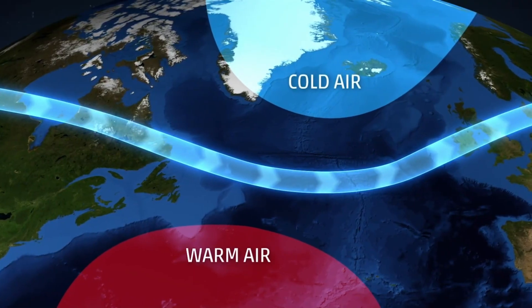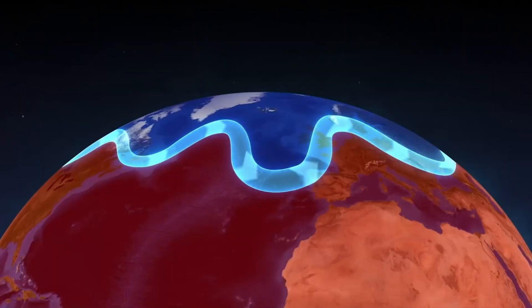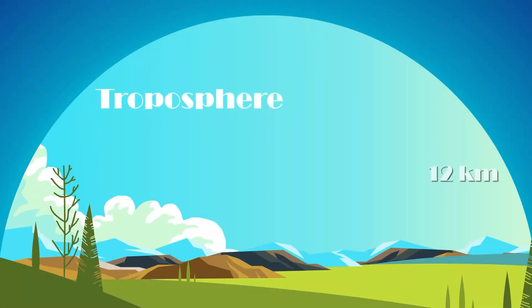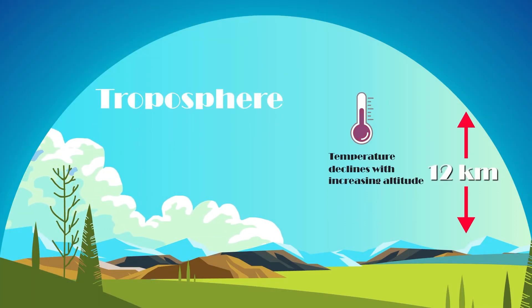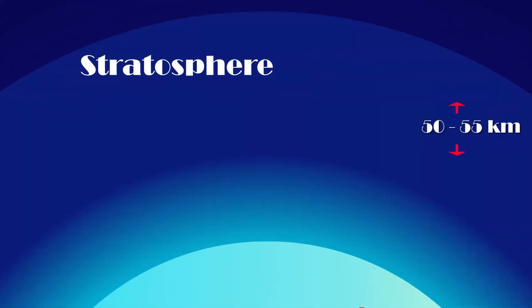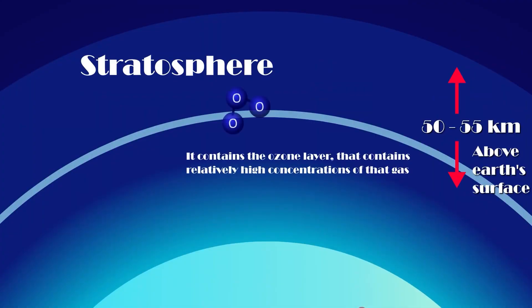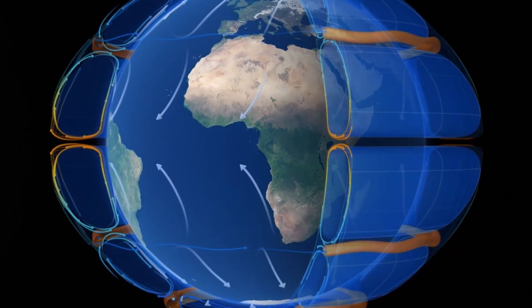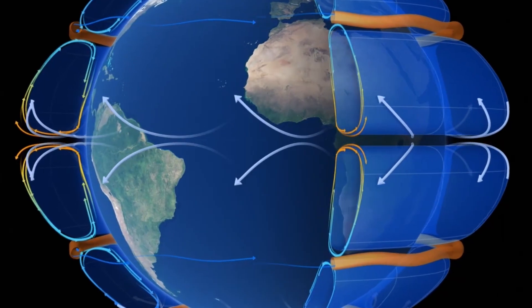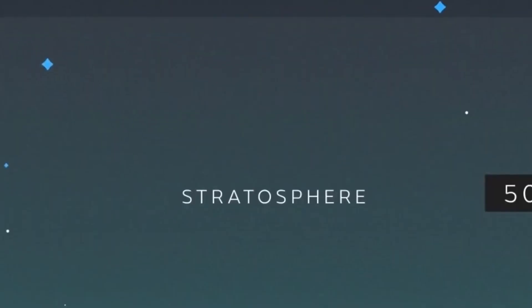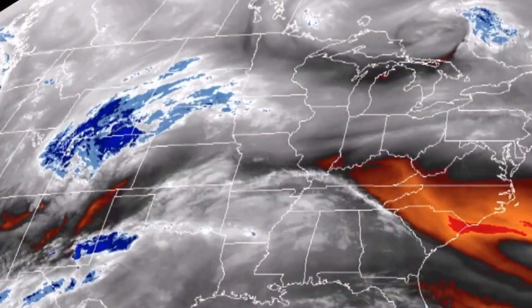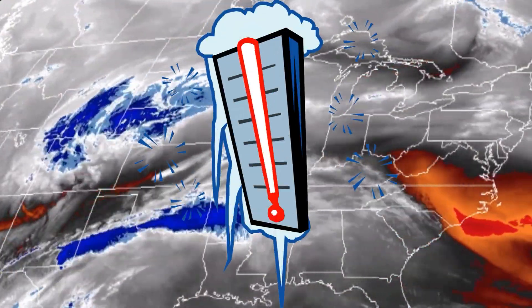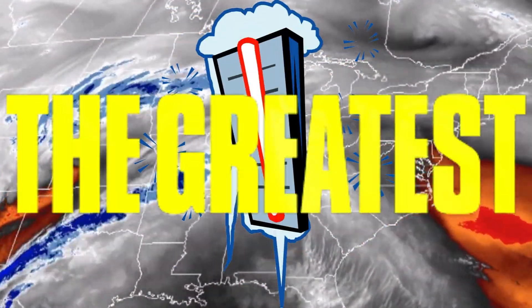Jet streams can be found all over the world and usually sit near the top of the troposphere, which is the lowest layer of the Earth's atmosphere and the place where the most weather occurs. The top of the troposphere, also known as the tropopause, fluctuates between 4 and 12 miles above the Earth's surface. This fluctuation results in rapid shifts in air temperature and pressure, creating a wind tunnel that can reach speeds of over 200 miles per hour — most common during the winter months when the temperature difference is greatest.